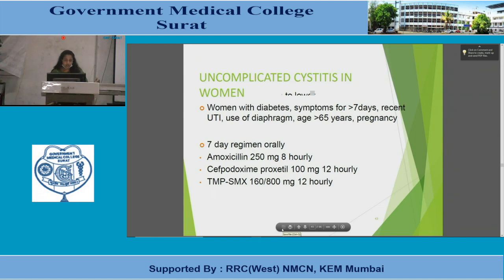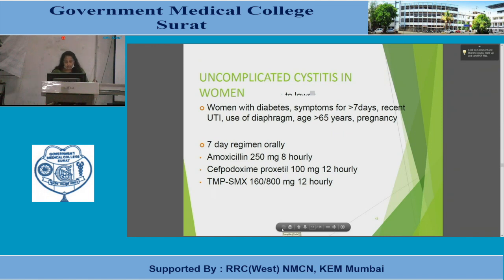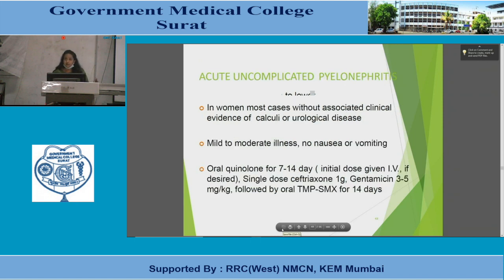For uncomplicated cystitis in women with specific factors — diabetes, other comorbid conditions, symptoms persisting more than seven days, recent UTI, use of diaphragm, age over 65, or pregnancy — the regimen should be extended to seven days and includes amoxicillin 250 mg eight-hourly, cefuroxime 100 mg 12-hourly, or trimethoprim-sulfamethoxazole 160/800 mg 12-hourly.